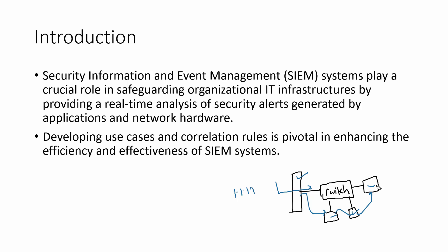We have System A, System B, and System C. What happens is there is an IP called 1.1.1.1 that was able to bypass the firewall, so the firewall generates a log. It then went to System A — generates a log. Went to B — generates a log. Went to C — generates a log. As an investigator, I need to go to each and every system to collect and correlate the logs, which is a problematic task.